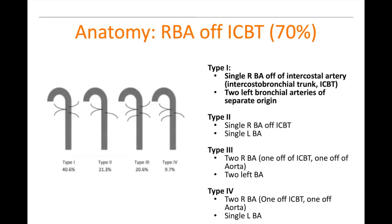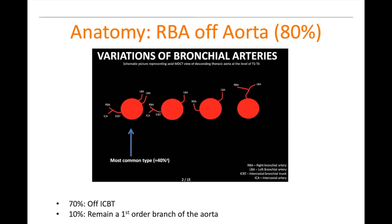It's not important to memorize all the types, but just know that 70% of the time there's a single right bronchial artery off the intercostal bronchial trunk; there can be two left bronchial arteries of separate origin, or just one. The most important thing to remember is that the most common type is the intercostal bronchial trunk off the aorta at the T5-T6 level where the left main stem bronchus crosses the descending aorta. Another 10% of the time, the right bronchial artery is just a branch off the aorta on its own — a first-order branch.